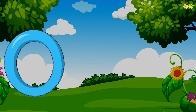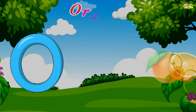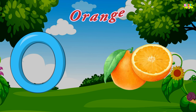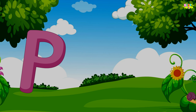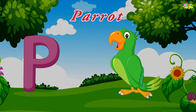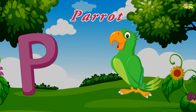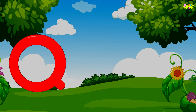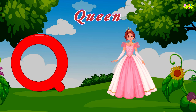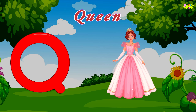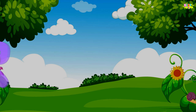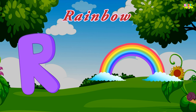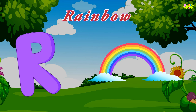O is for orange. O, O, orange. O, O, orange. O, orange. P is for parrot. P, P, parrot. P, P, parrot. P, parrot. Q is for queen. Q, Q, queen. Q, queen. Q, queen. R is for rainbow. R, R, rainbow. R, R, rainbow. R, rainbow.